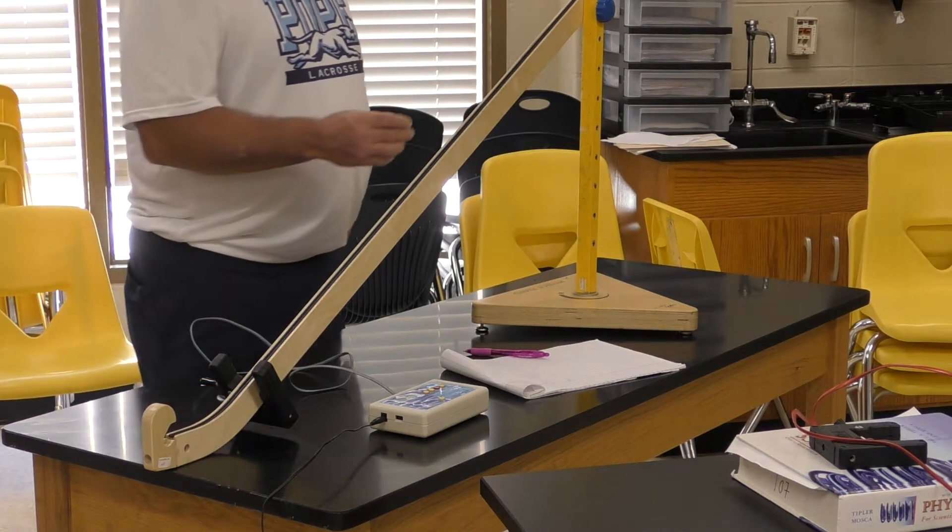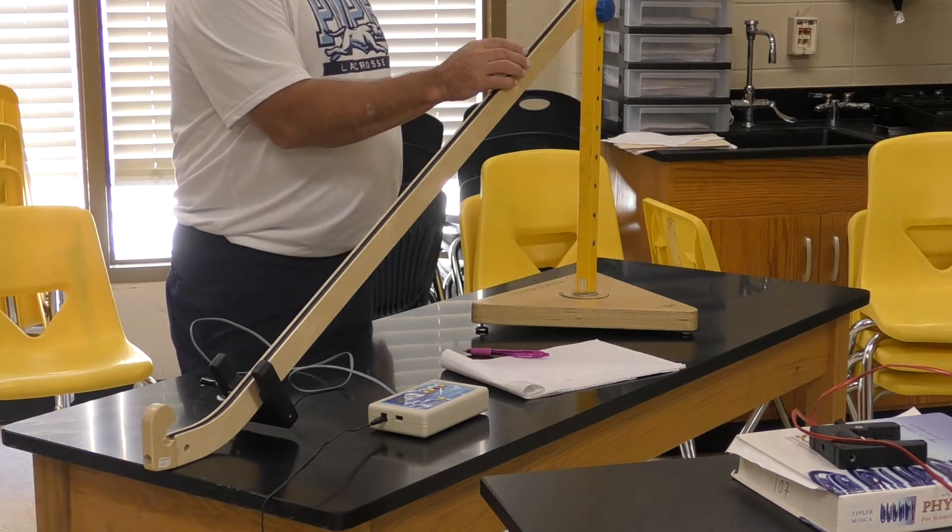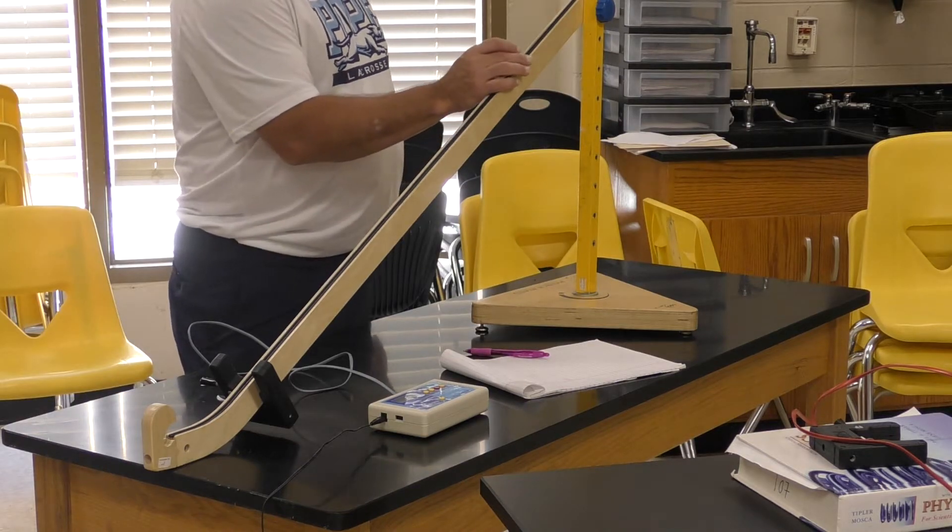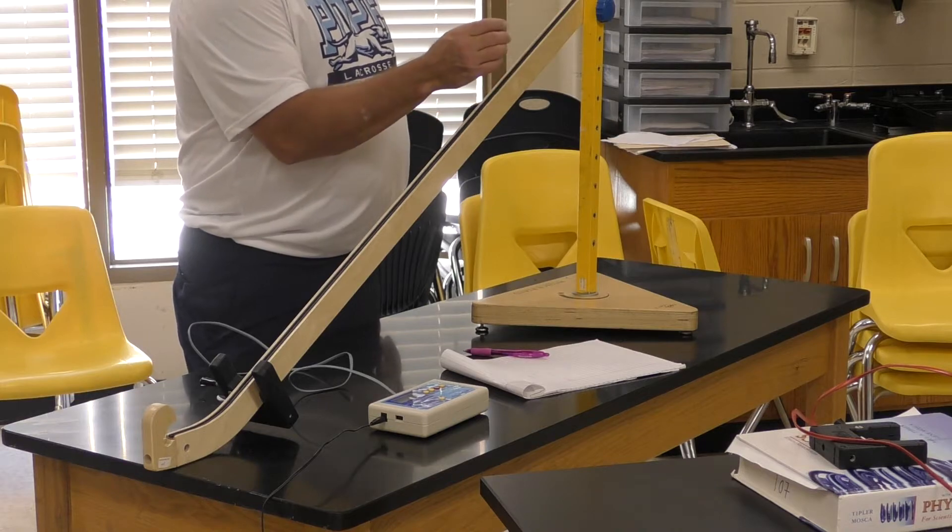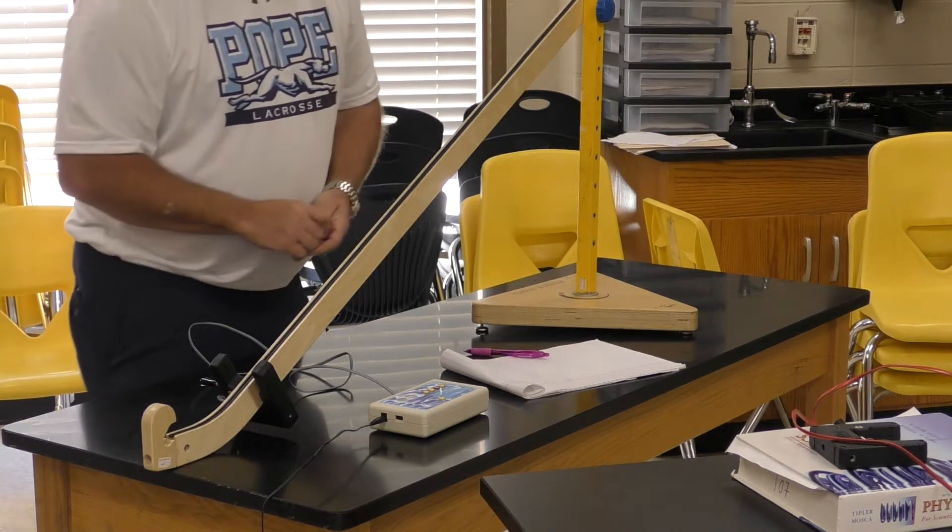So if I wanted to roll it, for example, from the 20 mark or 80 centimeters down the ramp, then from my graph I want to be able to pull that data off and tell me how fast it's going to be when it goes down the ramp.